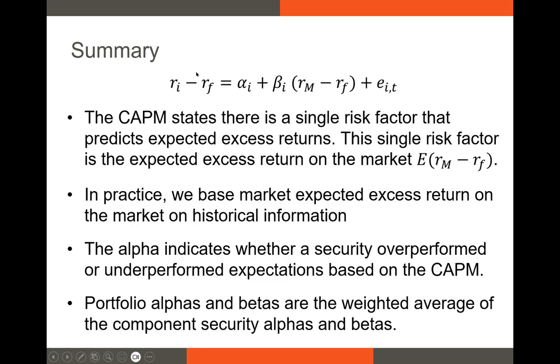Let's summarize. This is the formula that we talked about in this section. It's the regression form of the CAPM and the CAPM says that there is a single risk factor, the market risk premium that predicts excess stock returns. In practice, we calculate our alpha and beta using historical data. The alpha indicates the amount of outperformance or underperformance and portfolio alphas and betas are just weighted averages of the security alpha and betas. So with that, I'm going to conclude. And if you have any questions, please feel free to reach out to me. Thank you.